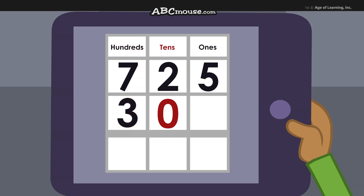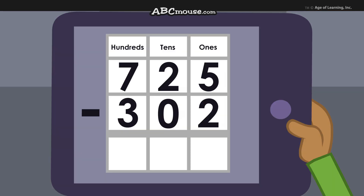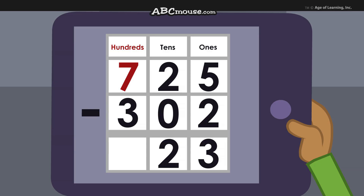Now let's subtract. Start with the ones: 5 ones take away 2 ones leaves 3 ones. Now the tens: take away 0 tens from 2 tens and we still have 2 tens. And 7 hundreds take away 3 hundreds leaves 4 hundreds. So our answer is 4 hundreds, 2 tens, and 3 ones — there are 423 gauze pads left. Good work, Gabriel!